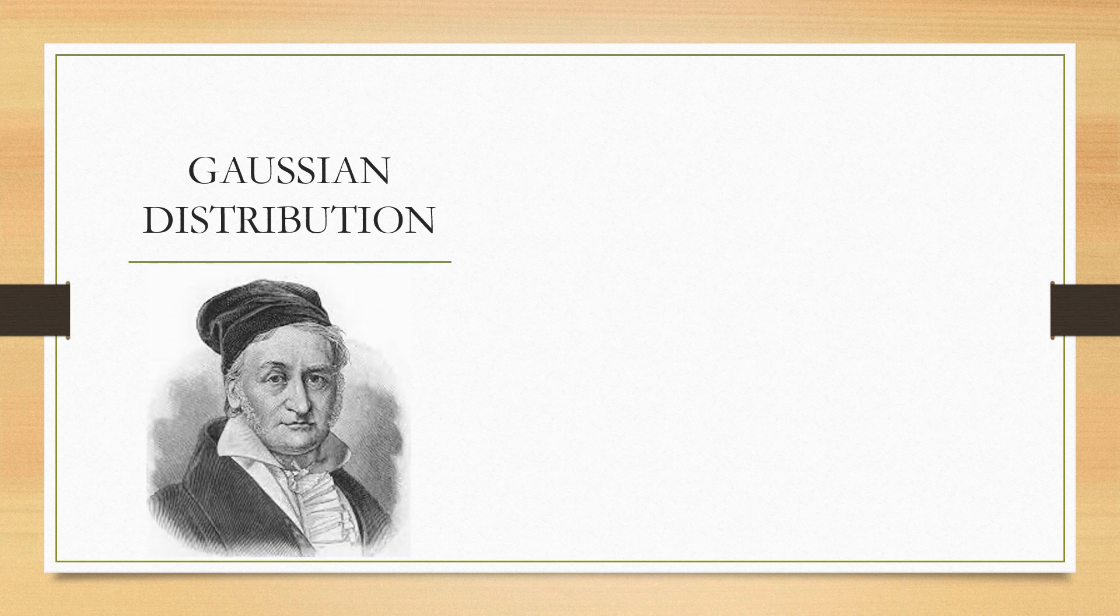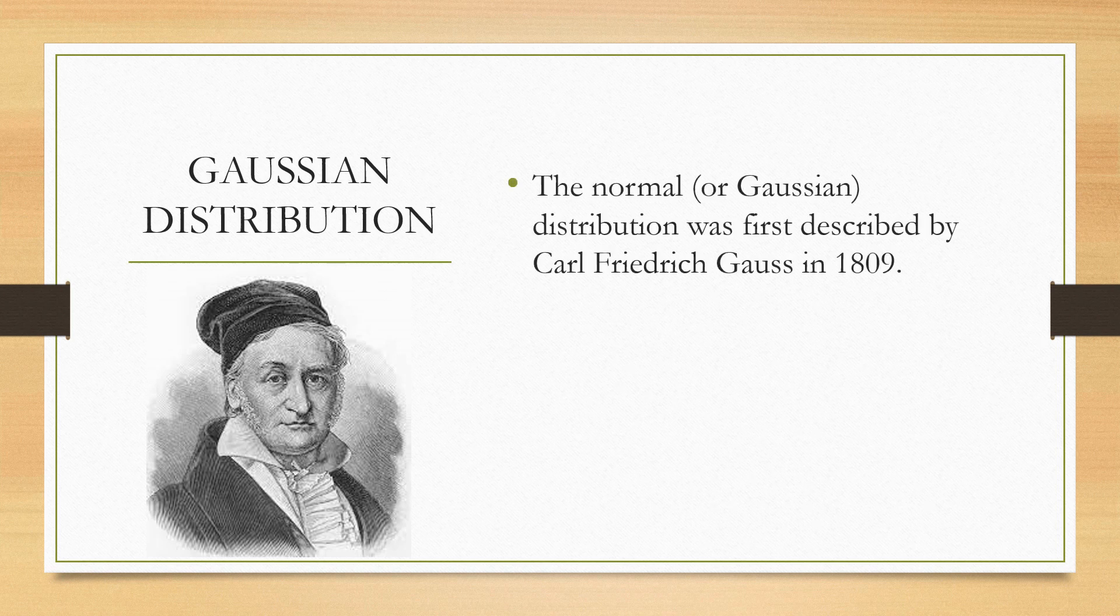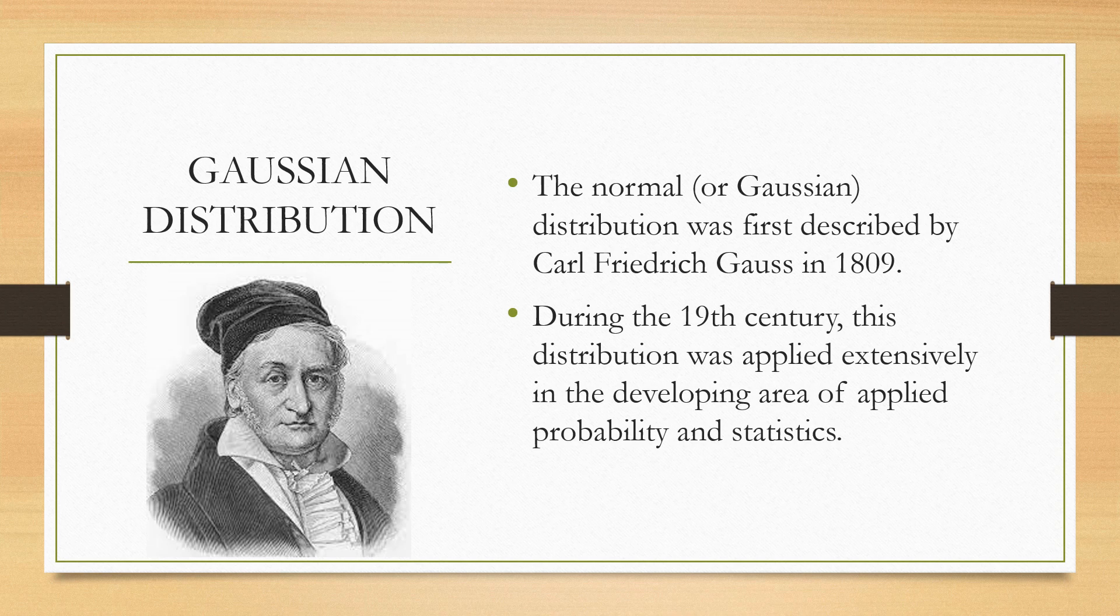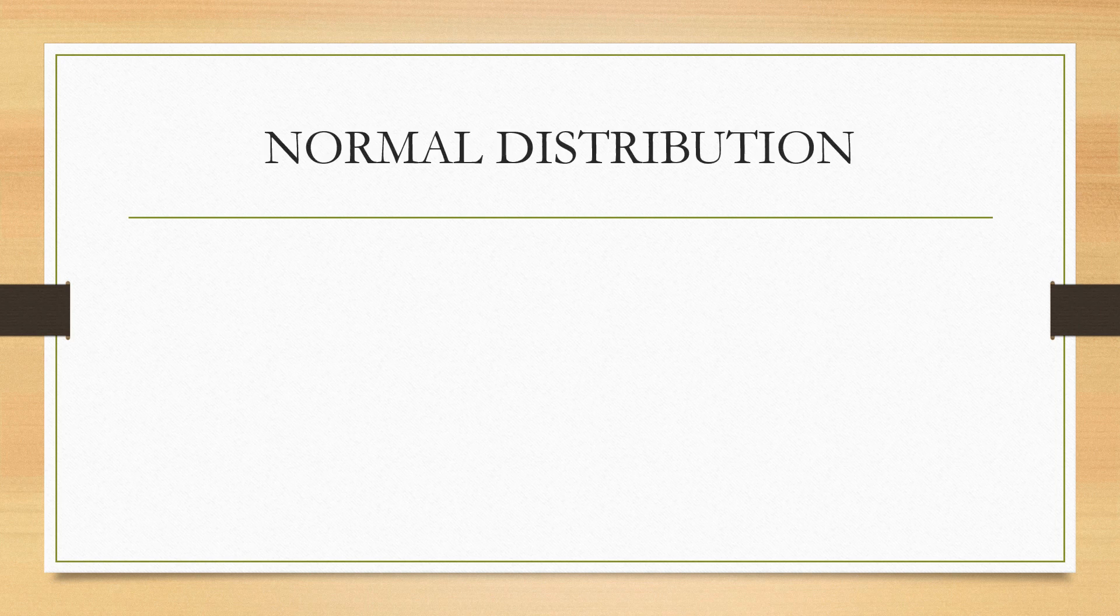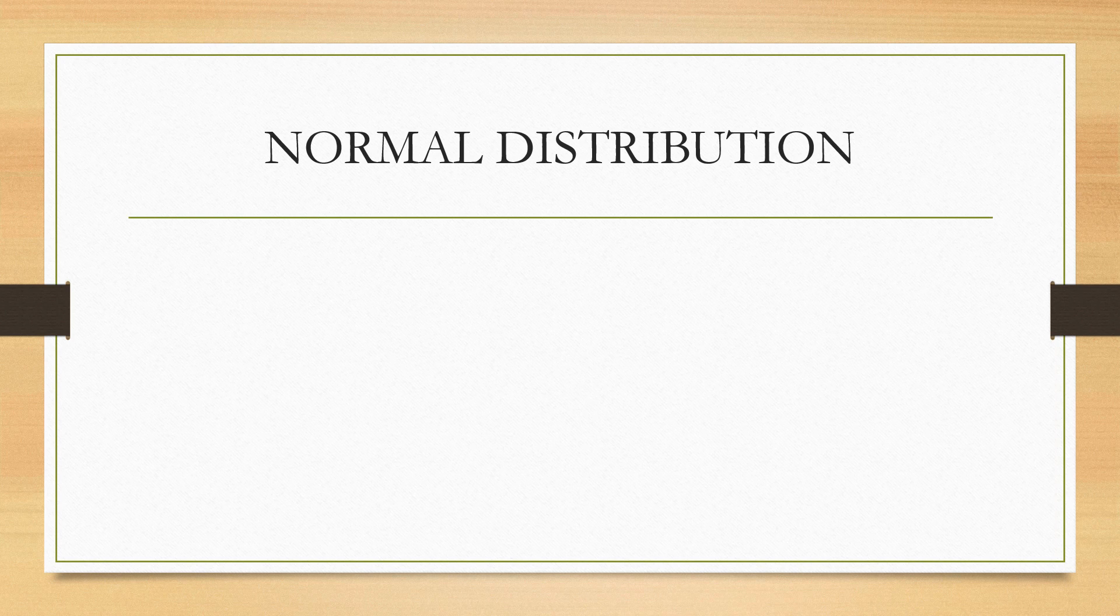Now let's go on to the inputs of this lesson. Let's start with the Gaussian Distribution. Gaussian Distribution was named after Carl Friedrich Gauss in 1809. During the 19th century, this distribution was applied and used in the area of probability and statistics. Other name for Gaussian Distribution is the normal distribution. It is a probability function that describes how the values of a variable are distributed.